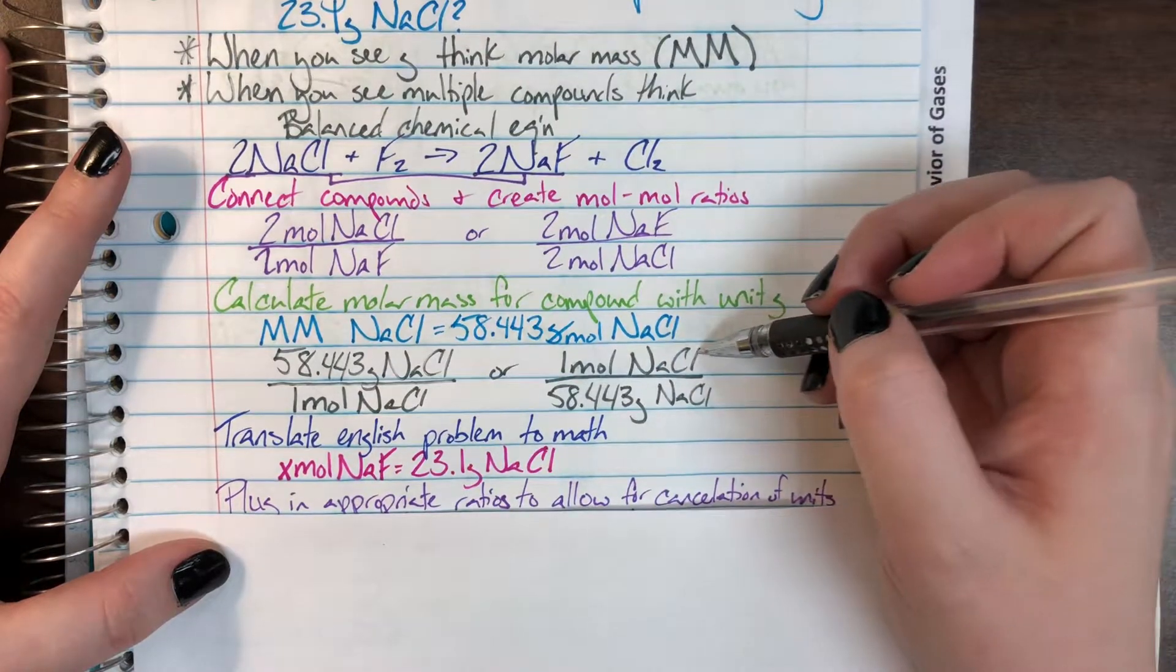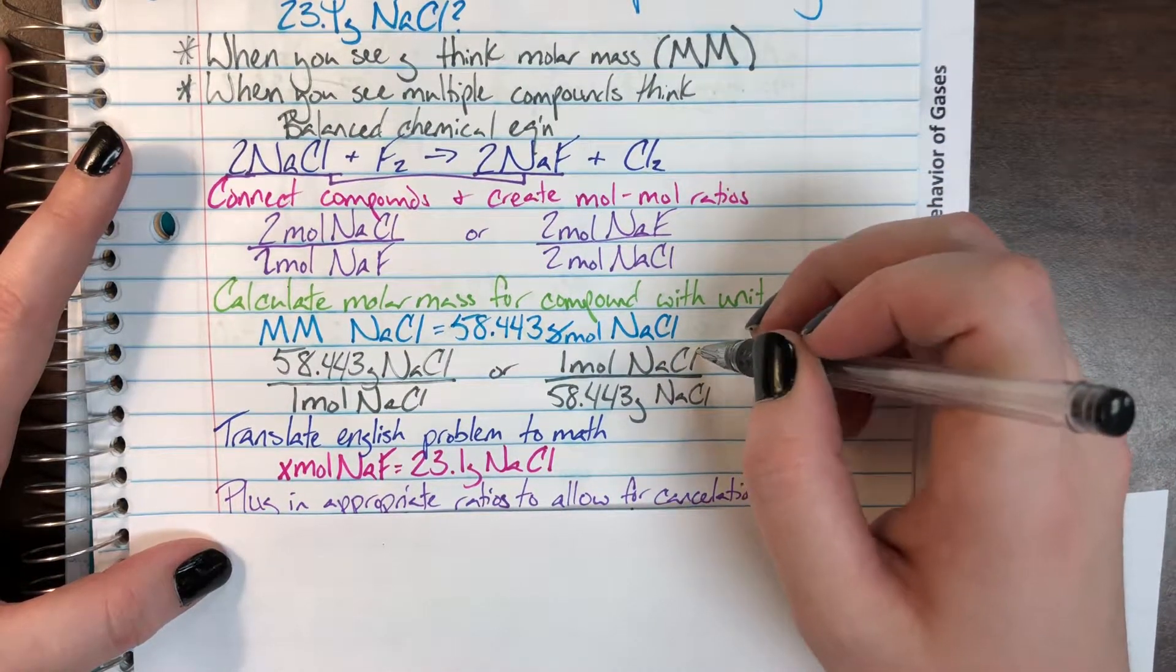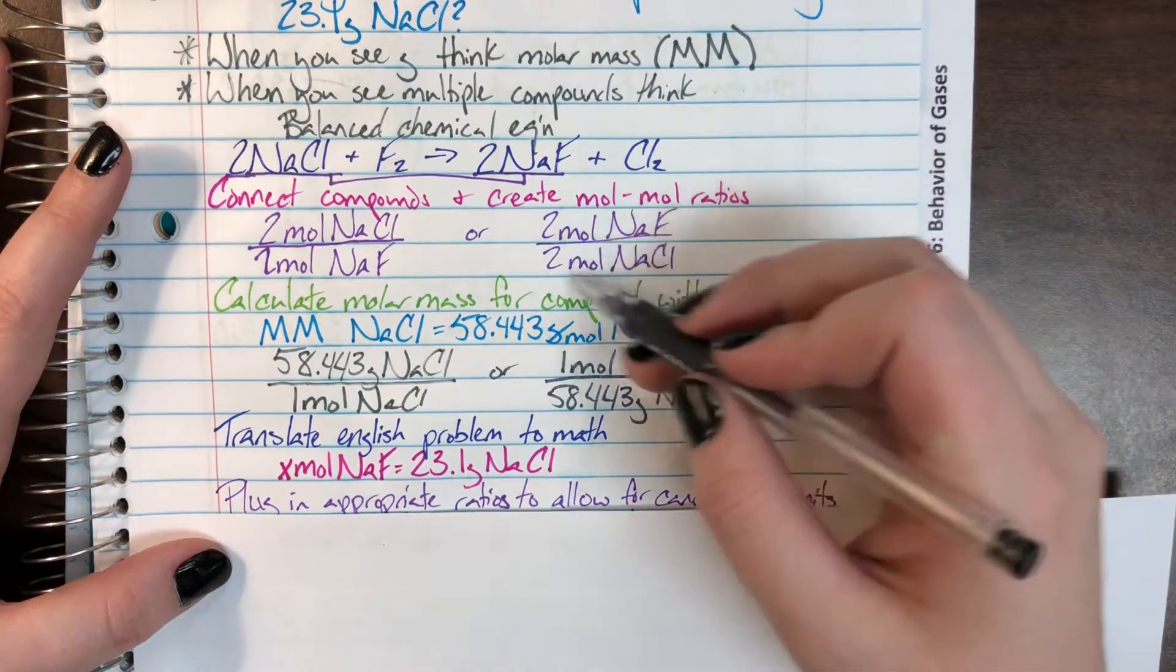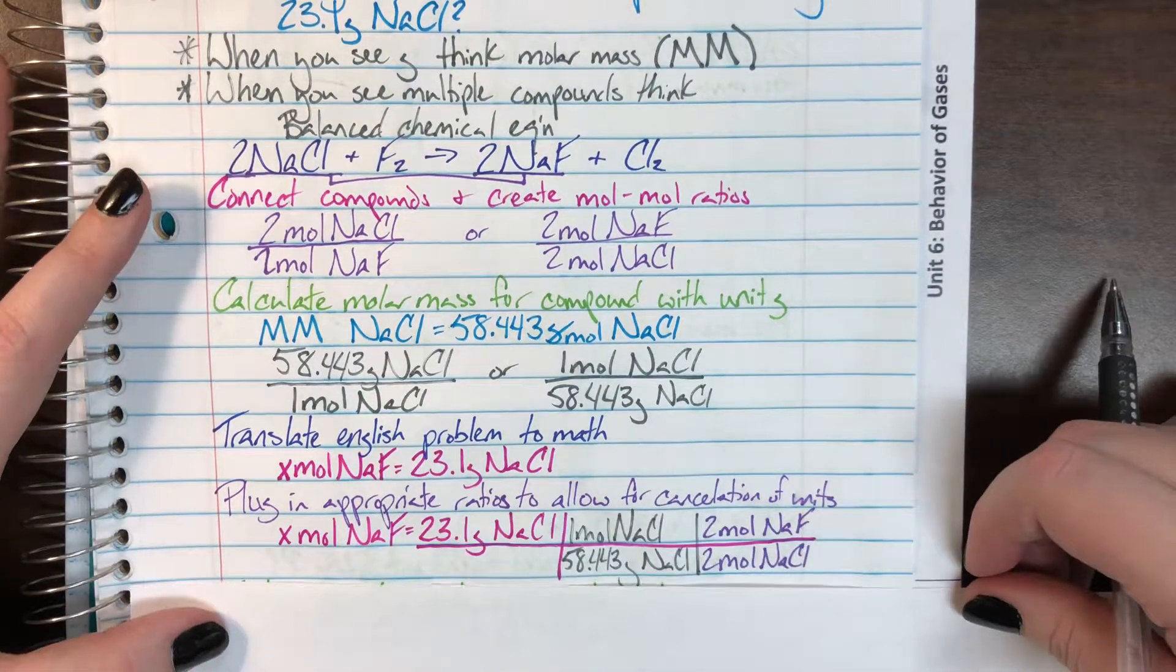Then I will have moles of sodium chloride on the top. So, that means I need to choose the one that will allow me to cancel moles of sodium chloride. Which means I will choose the second ratio version. So, this is just me plugging it in.